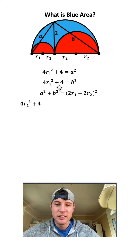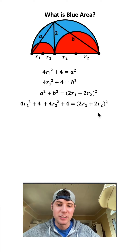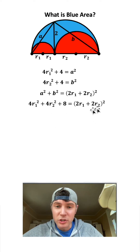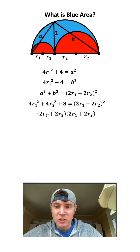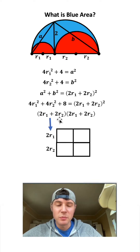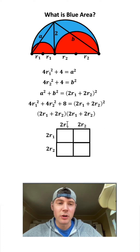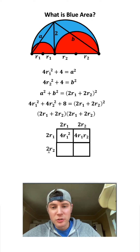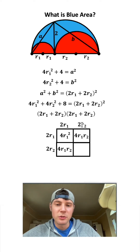I plug this expression in for a². Same thing: we have a b² here and a b² there, so I plug in for b² and bring this down. To clean up the left-hand side, I add 4 + 4 to get 8. On the right-hand side, to square the parentheses we multiply it by itself: 2×2=4 and r₁×r₁=r₁²; then 2×2=4 and r₁×r₂=r₁r₂; same again for the cross term giving 4r₁r₂; and 2×2=4 with r₂×r₂=r₂².